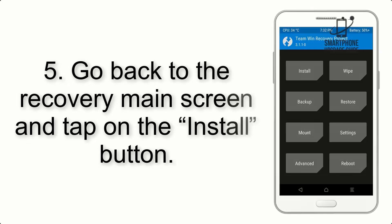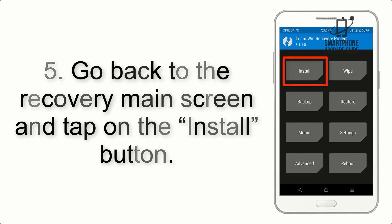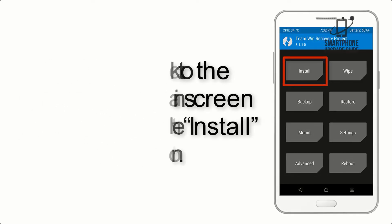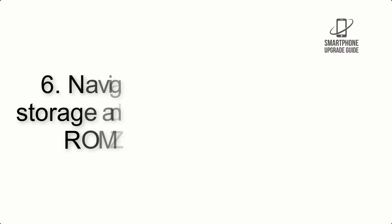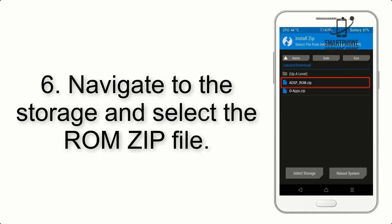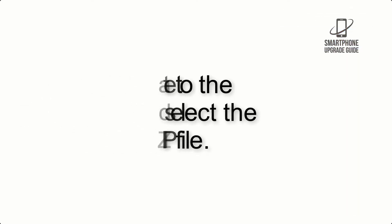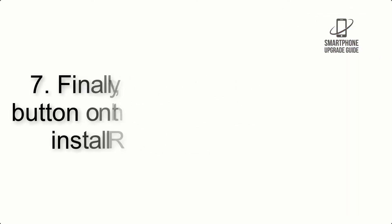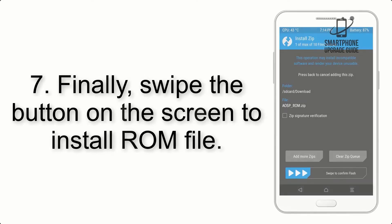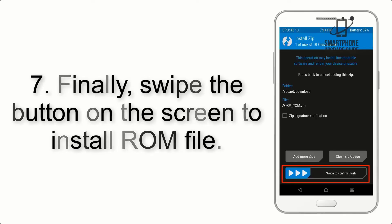Step 5: Go back to the recovery main screen and tap on the Install button. Step 6: Navigate to storage and select the ROM file. Step 7: Finally, swipe the button on the screen to install the ROM file.